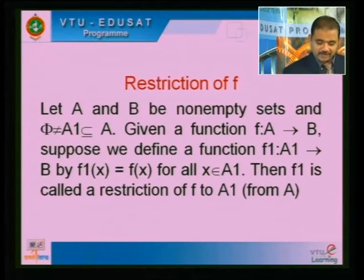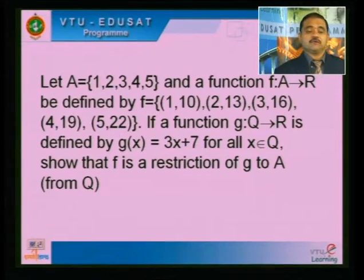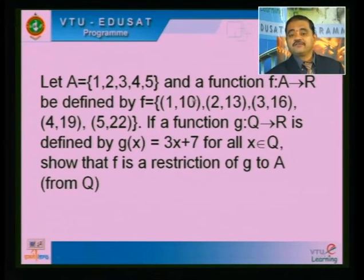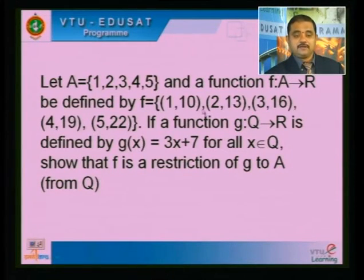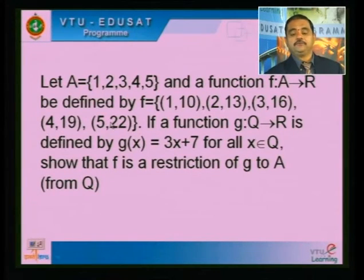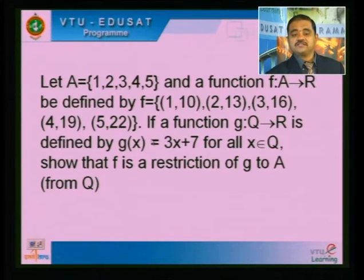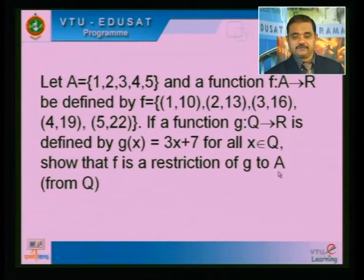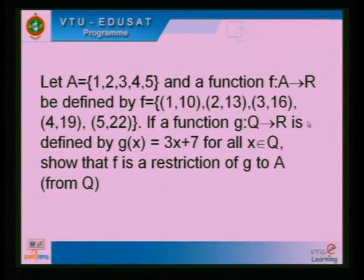Example: A = {1, 2, 3, 4, 5}, F: A → R defined as F = {(1,10), (2,13), (3,16), (4,19), (5,22)}. If G: Q → R is defined by G(x) = 3x + 7 for all x ∈ Q, show that F is a restriction of G to A from Q. Note A ⊆ Q ⊆ R.